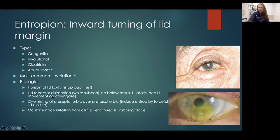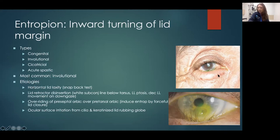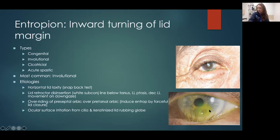Why does this happen? Same as ectropion — horizontal laxity, which you can assess with the snapback test, can cause the eyelid to turn in. Lid retractors — a muscle in the lower eyelid — can disinsert and pull the eyelid inward. You can also have overriding orbicularis muscles, where the preseptal orbicularis pushes over and overrides the eyelid margin. You can see that in younger kids and also in adults. You can see here a defect of the epithelium of the cornea staining with fluorescein — the lashes are disrupting it and it needs to be treated.